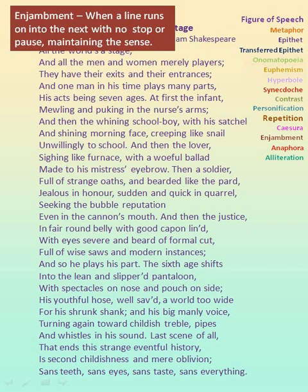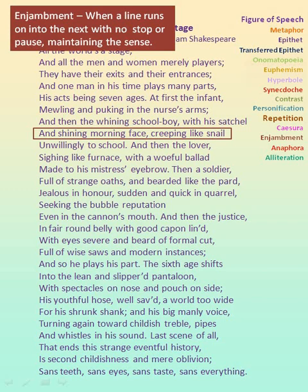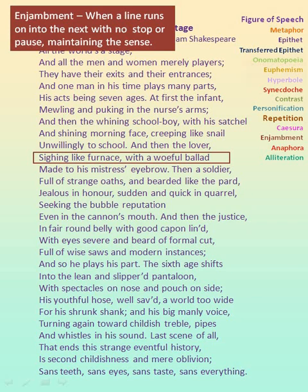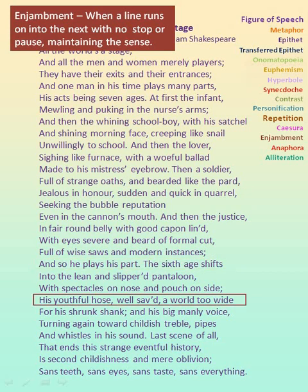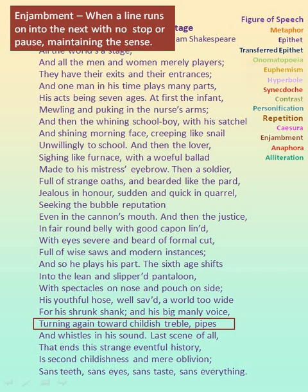Enjambment is when a line runs on into the next line without any stop or pause at the end, maintaining the sense. In 'with his satchel' — there is no punctuation at the end and it runs into the next line. 'And shining morning face, creeping like snail' — after snail there is no punctuation. 'Sighing like furnace with a woeful ballad' — no punctuation. 'Seeking the bubble reputation' — no punctuation at the end. 'And so he plays his part, the sixth age shifts' — no punctuation. 'His youthful hose, well saved, a world too wide' — no punctuation. 'Turning again toward childish treble pipes' — after pipes there is no punctuation. Hence, in all these lines, enjambment is used.